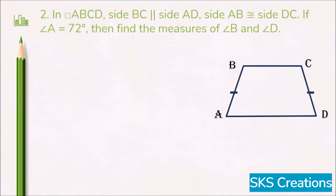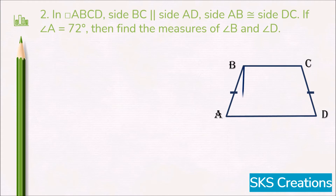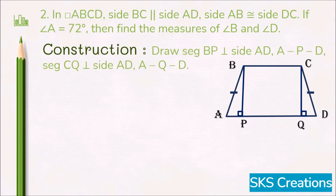Question two: In quadrilateral ABCD, side BC is parallel to side AD, side AB is congruent to side DC, and if angle A equals 72 degrees, find the measure of angle B and angle D. For the solution, we do a construction: draw perpendicular segment BP from vertex B to side AD, and similarly draw perpendicular segment CQ from vertex C to side AD.